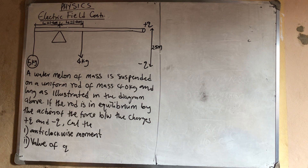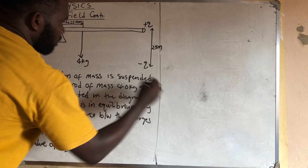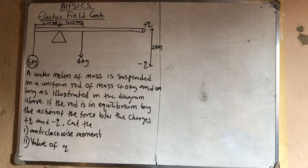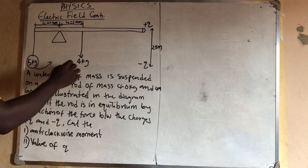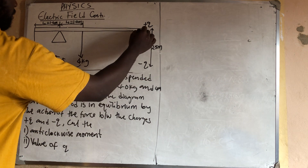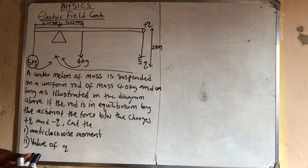Now if you look at this question, it's very simple. They gave us a watermelon of mass suspended on a uniform rod of mass 4 kg and 4 meters long. As illustrated in the diagram, if the rod is at equilibrium by the action of the force between the charges — positive q and negative q — then calculate the anti-clockwise moment. There is an electrostatic force of attraction acting here on the knife edge.